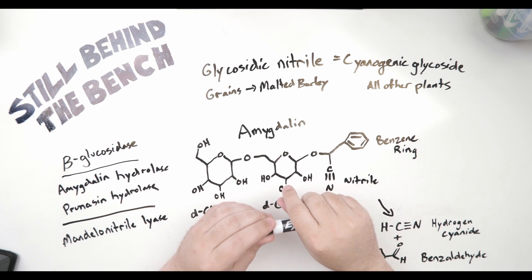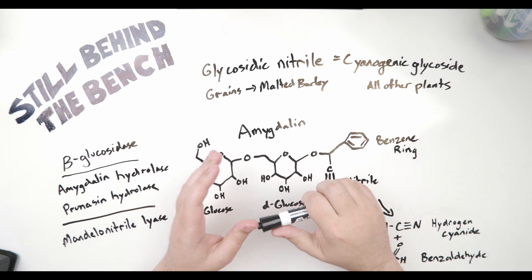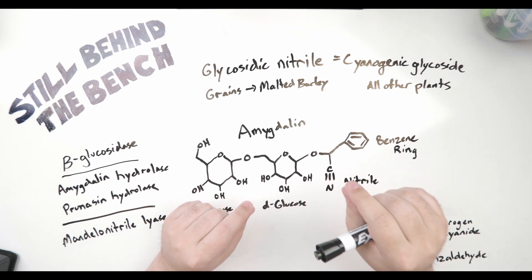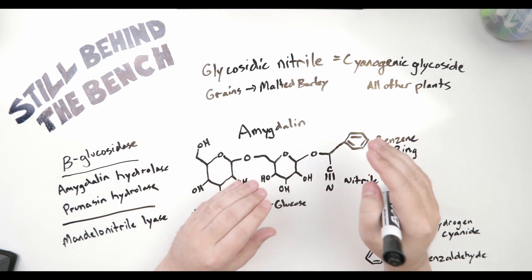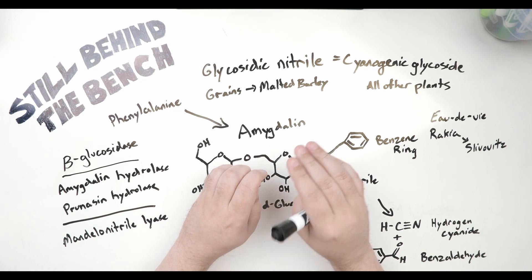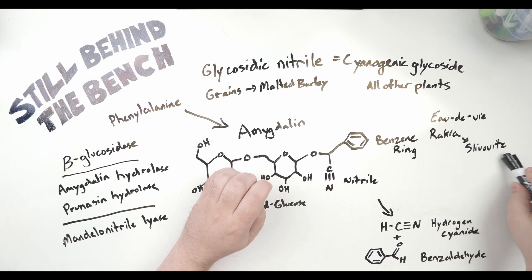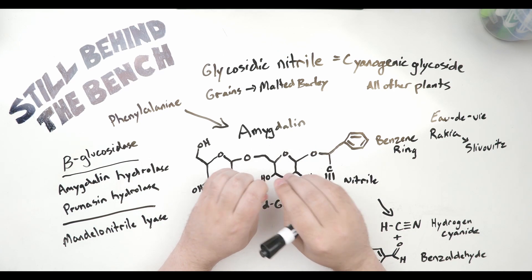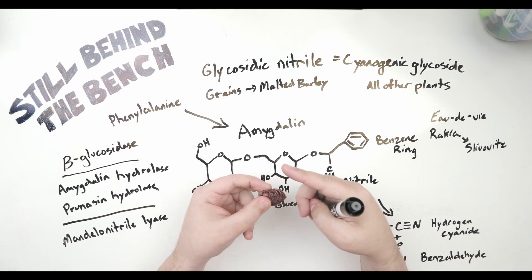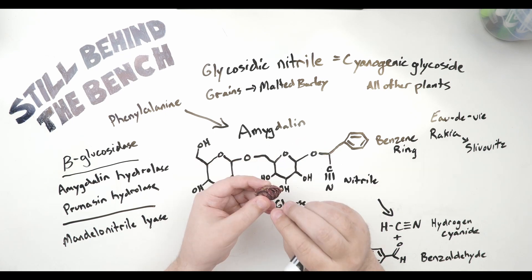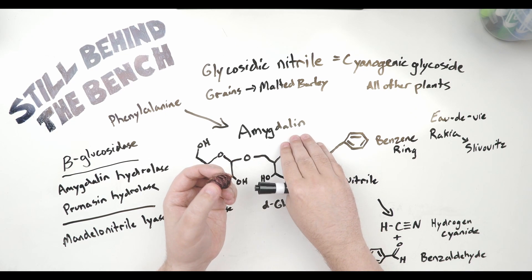I'm going to focus on the prunus genus — stone fruit — and then talk about cassava and sorghum. All cyanogenic glycosides in fruits and vegetables undergo the same general steps to turn into hydrogen cyanide, which goes on to become ethyl carbamate; they just use differently named enzymes. Stone fruit makes some very good spirits — entire industries have built up around them, like Odoviz and Rakia. Slivovitz is a very specific Rakia, from the Balkans, made specifically from plums. The problem with stone fruit is that a cyanogenic glycoside is produced within the pit — the stone, kernel, or seed — and the cyanogenic glycoside in stone fruit is amygdalin.